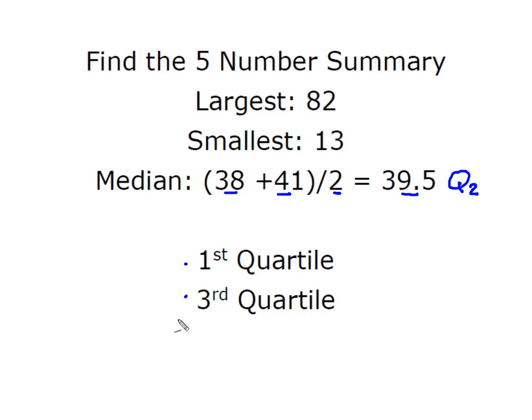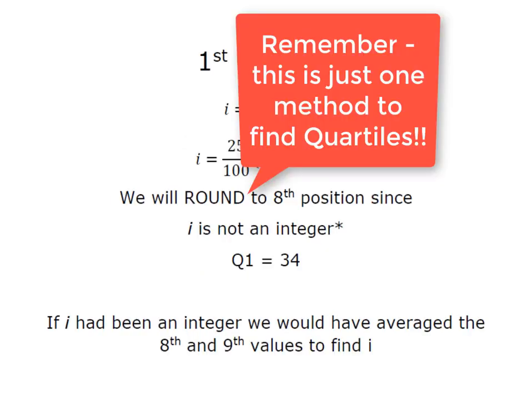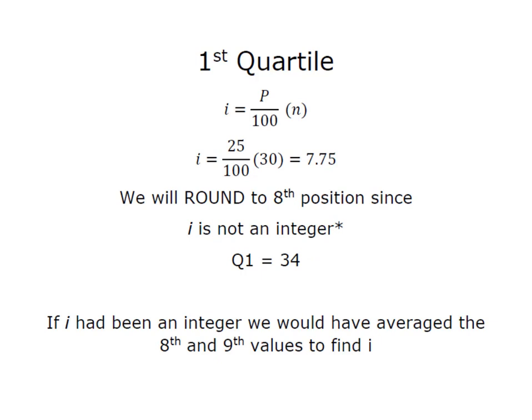Now we're going to find the first and the third quartile. Remember that when we're looking for the first quartile we have to find an index value first and we're going to do that by dividing the percentile that we're looking for by a hundred multiplied by the number of values. Remember the first quartile is the same thing as P25. So I've simply taken 25 divided by 100 times 30 gives me 7.75. We'll round to the eighth position because i is not an integer or whole number and now I know that Q1 is 34.